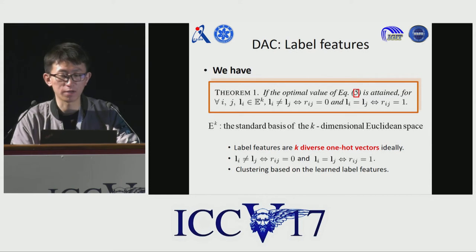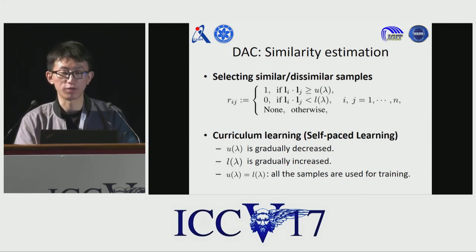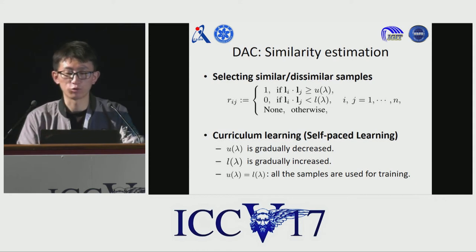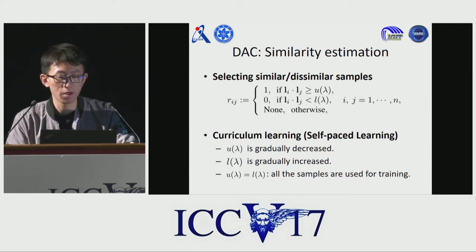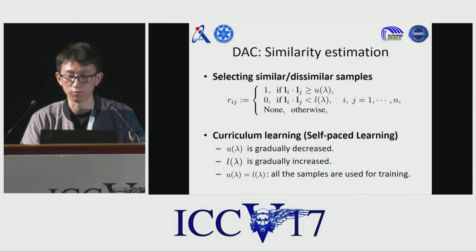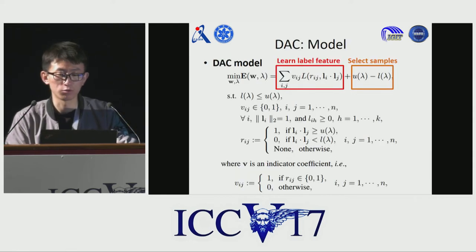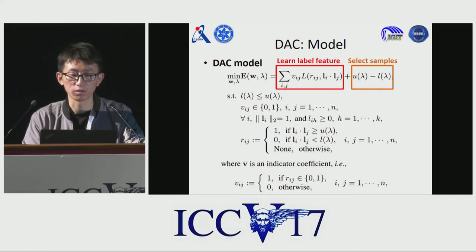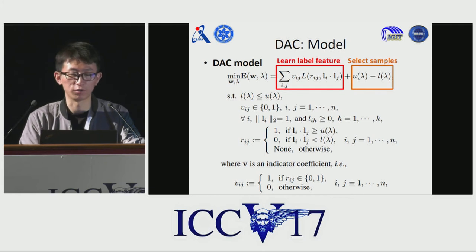For the second problem, we select similar or dissimilar pairwise samples based on the similarity between label features. Inspired by self-paced learning, we attempt to control the clustering procedure such that the pairwise samples are gradually selected. Easy pairwise samples with high likelihood are first selected to find rough patterns. Then, as the clustering procedure progresses, the model can be utilized to learn more effective label features. More pairwise samples will be gradually appended in training to find more refined patterns. The DAC model is reformed such that by decreasing a threshold, more pairwise samples will be selected for training until all the samples are included.